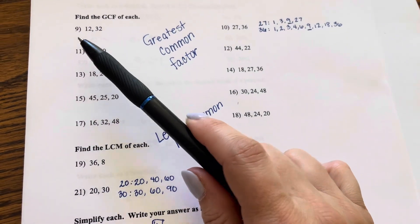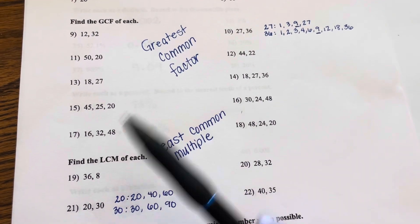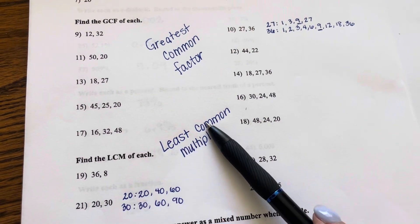finding the GCF and finding the LCM. So, the GCF means greatest common factor, and the LCM means the least common multiple.